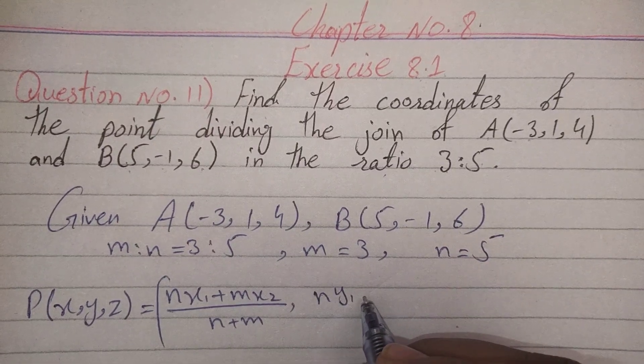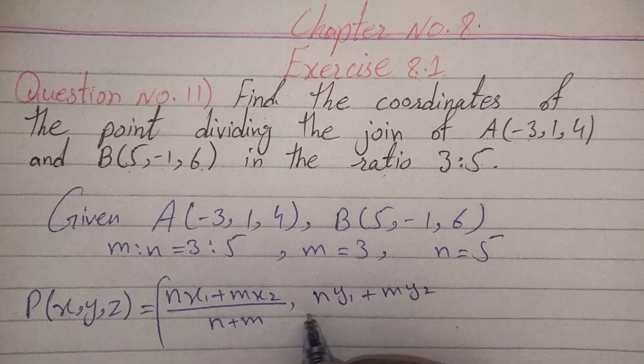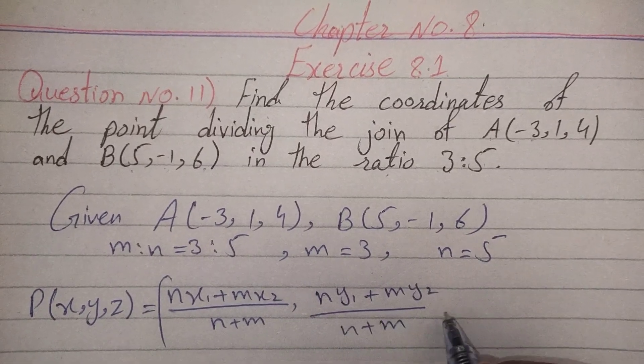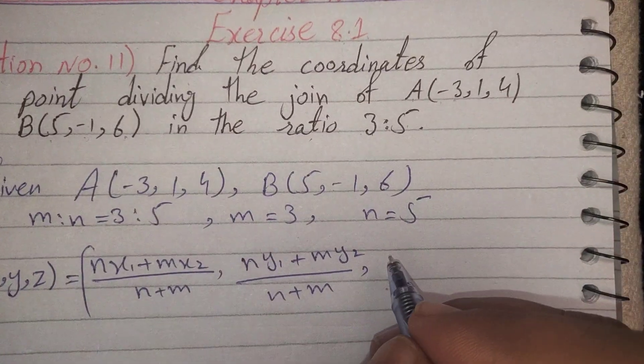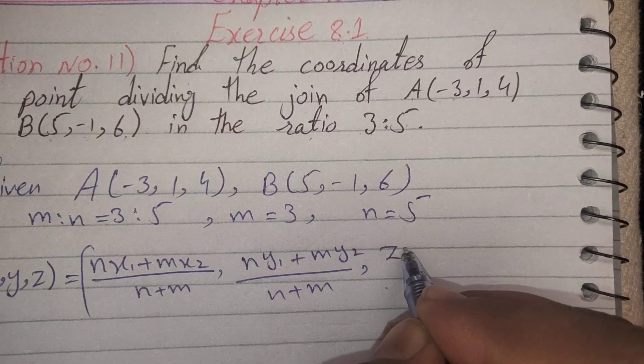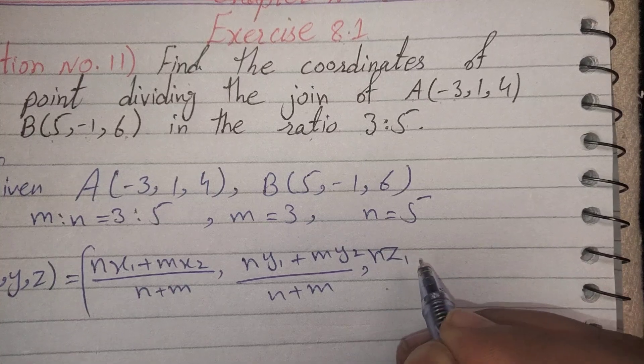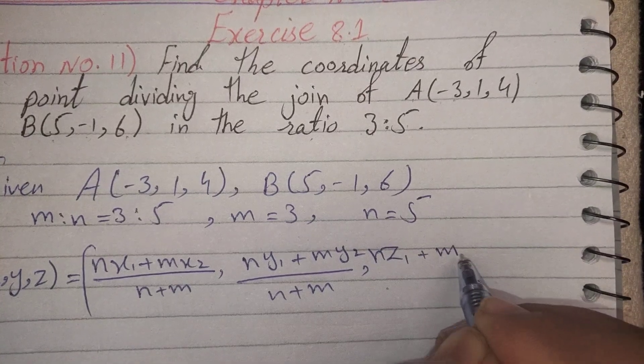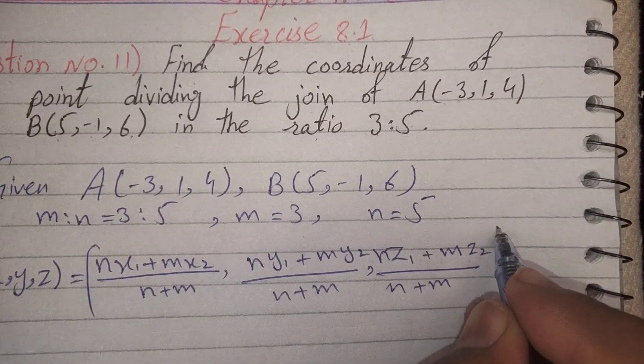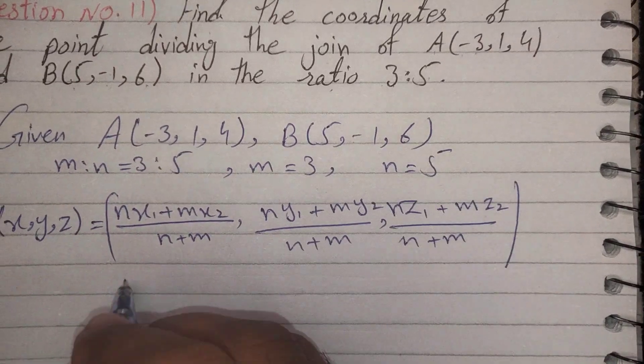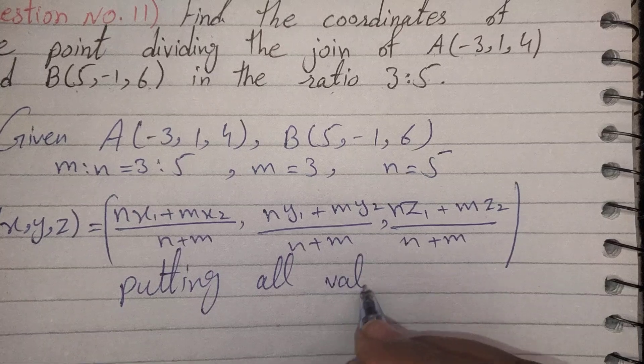The y-coordinate is (ny₁ + my₂) over (m + n), and the z-coordinate is (nz₁ + mz₂) over (m + n). Now putting all values.